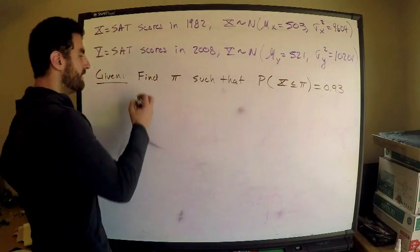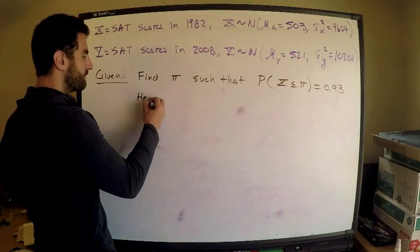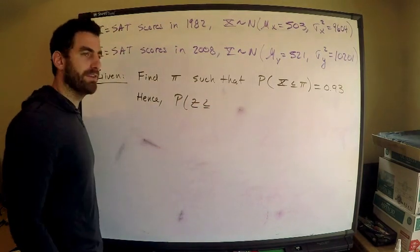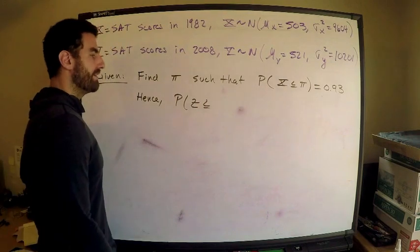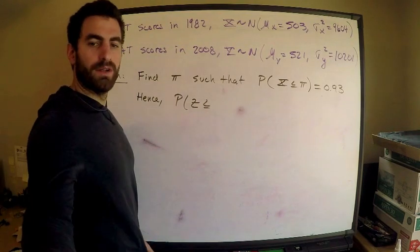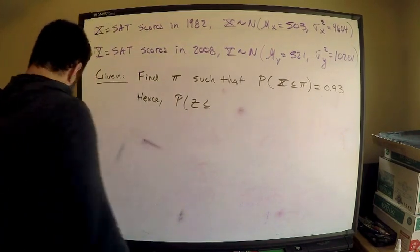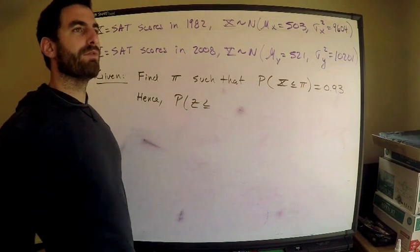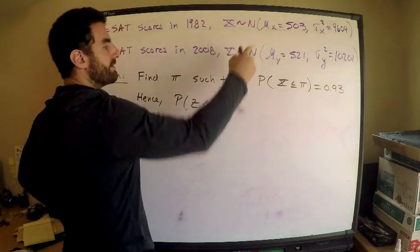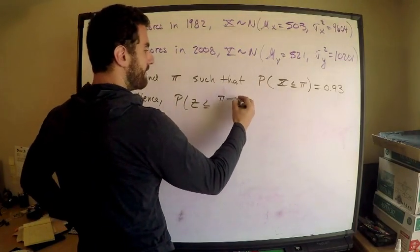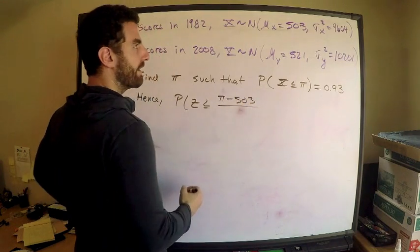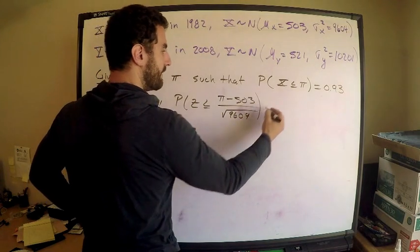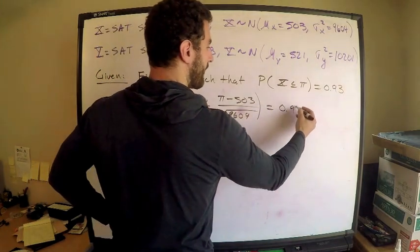I need to convert this to Z. Hence, we have the following probability that Z—I'm going to make this into a standard normal random variable. So pi minus the mean, pi minus the mean, divided by the standard deviation, so square root 9604, is equal to 0.93.